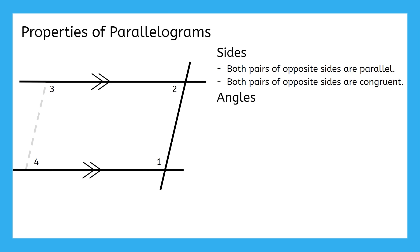Do you notice anything about angles 1 and 2? They're consecutive interior angles, so we know that they must be supplementary. This is actually true for every pair of consecutive interior angles in a parallelogram. So, angles 1 and 2, angles 2 and 3, angles 3 and 4, and angles 4 and 1.